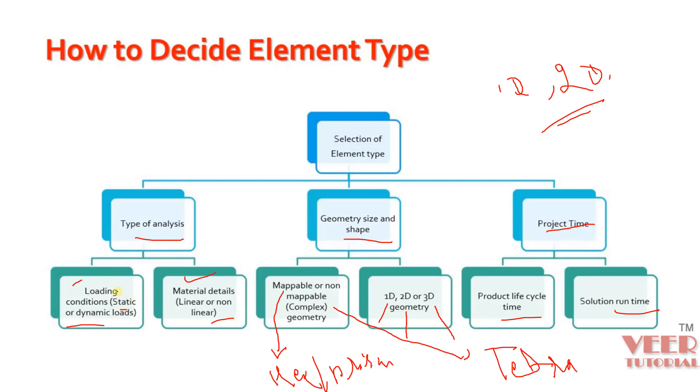Similarly, the element type also depends on the type of analysis. When we perform static analysis, we can use a simple mesh with a higher element size. But when we are going to perform non-linear analysis, we need a good quality of mesh. So in that situation, in case of 2D, it is recommended to use the quad element. And similarly for 3D, it is recommended to use the hex element.